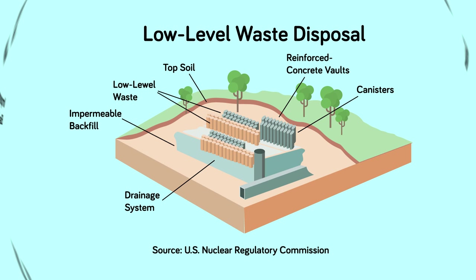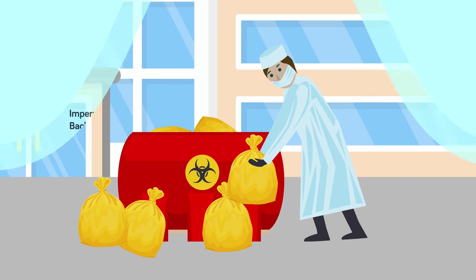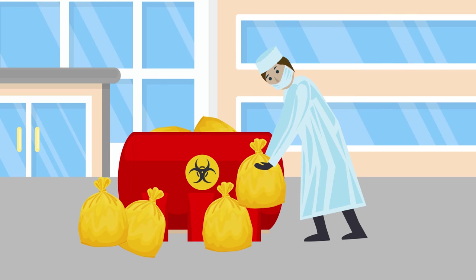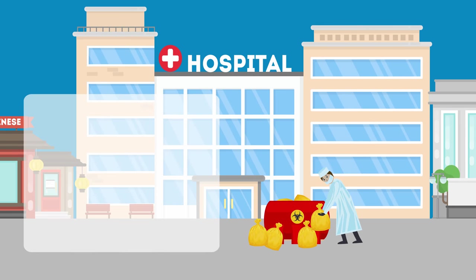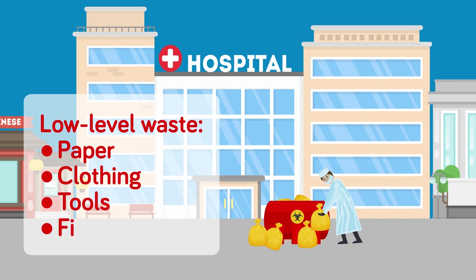Low-level waste is the most common waste type because it's anything that came into contact with radioactivity. Common in hospitals and processing plants, it can include paper, clothing, tools, and filters that are used by people working with nuclear energy. These objects pick up trace levels of radioactivity and should be disposed of safely, instead of being processed with standard trash.